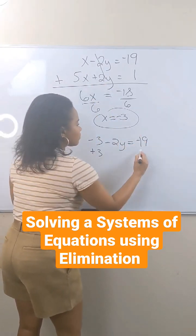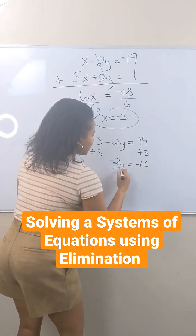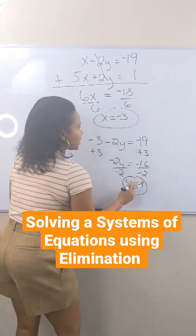And then I just have a regular simple two-step equation. Solving it using inverse operations, and I'm left with y equals 8.